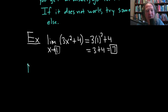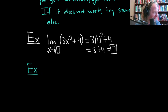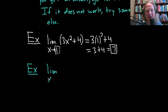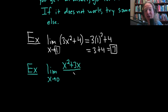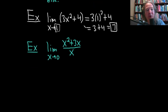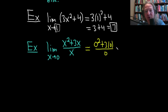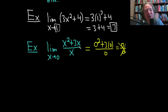Let's do another one. Here's a harder one: the limit as x approaches 0 of (x² + 3x) over x. If I plug in 0, I get 0 squared plus 3 times 0 over 0, which is 0 over 0. That's no good — you cannot divide by 0. So we have to do something else. In this example, we're going to factor.